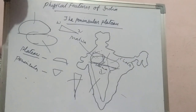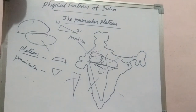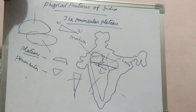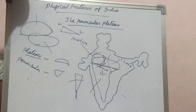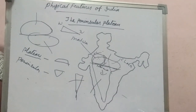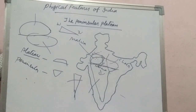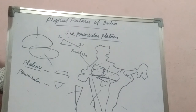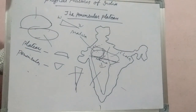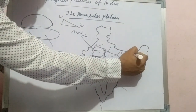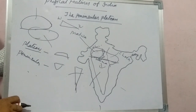The extension of the plateau is also visible in the northeast, locally known as the Meghalaya Plateau, Karbi Anglong Plateau, and North Cachar Hills. It is separated by a fault from the main Peninsular Plateau. Three prominent hills from west to east are Garo, Khasi, and Jaintia Hills.